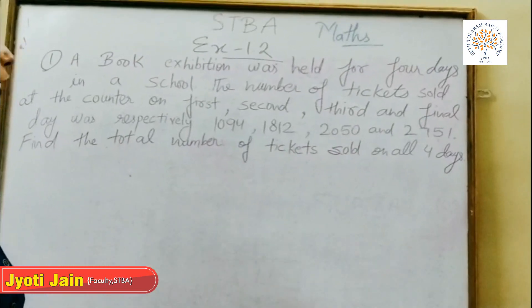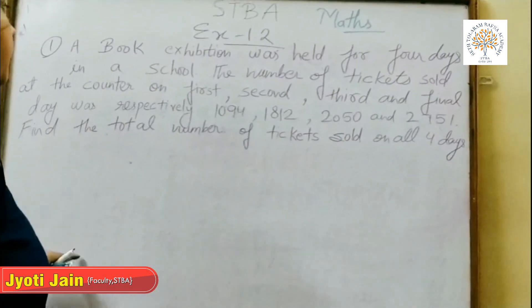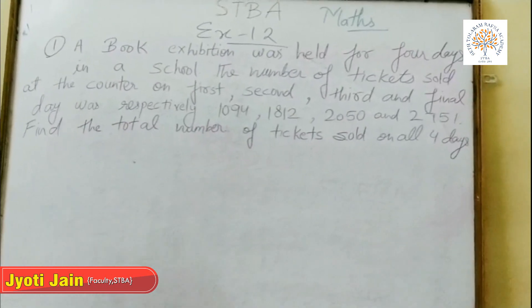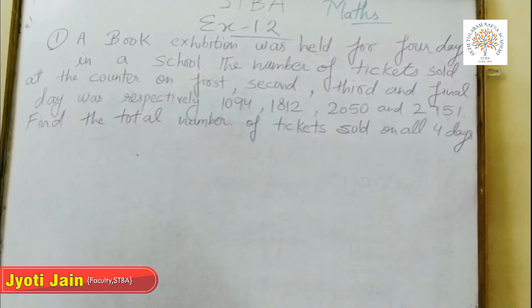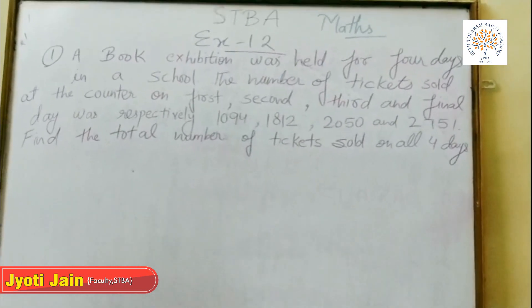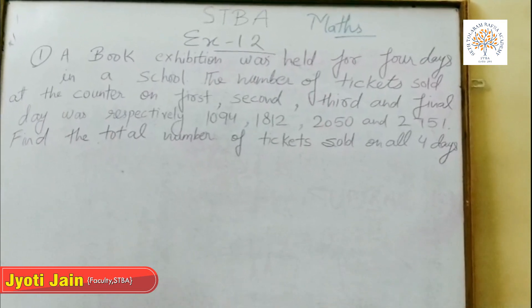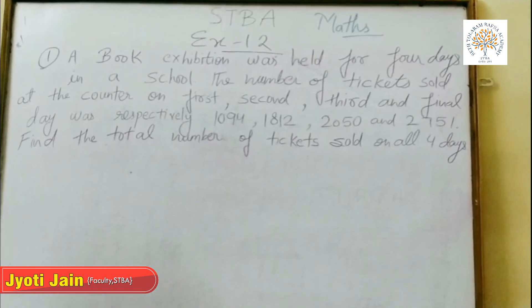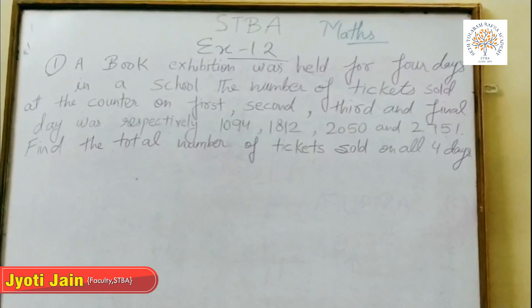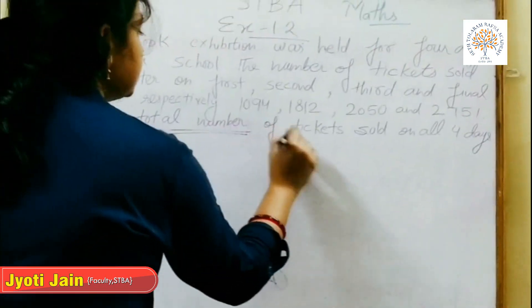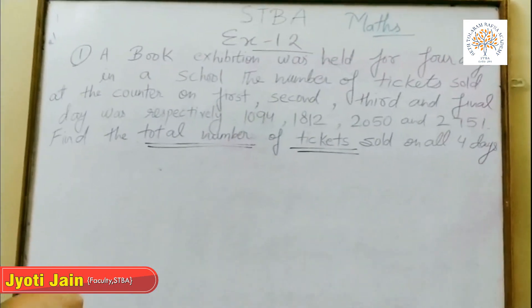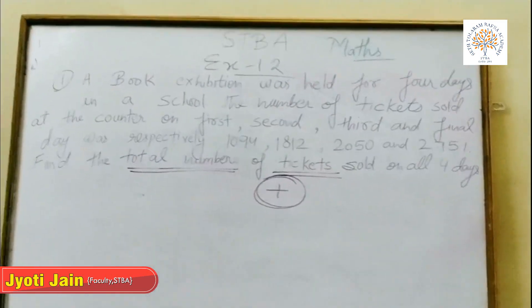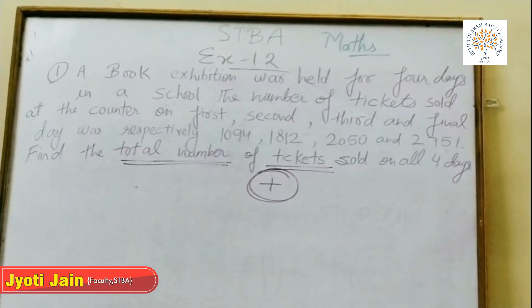This is the first question of exercise 1.2. A book exhibition was held for 4 days in a school. The number of tickets sold on the 1st, 2nd, 3rd, and final day was 1,094, 1,812, 2,050, and 2,751 respectively. Find the total number of tickets sold on all days. To find the total, we have to do addition — this is a word problem related to addition.